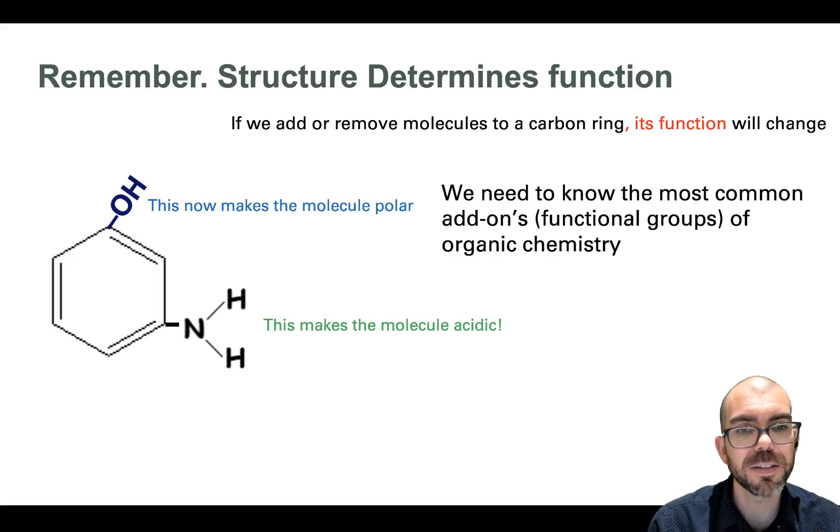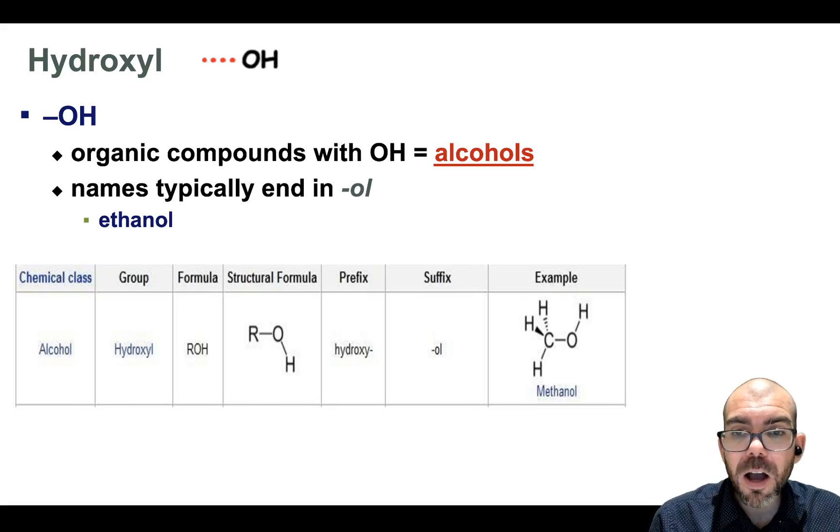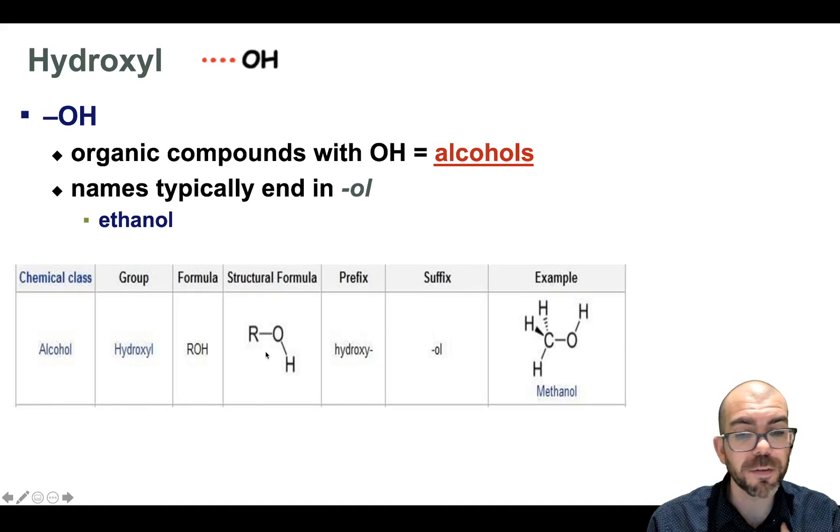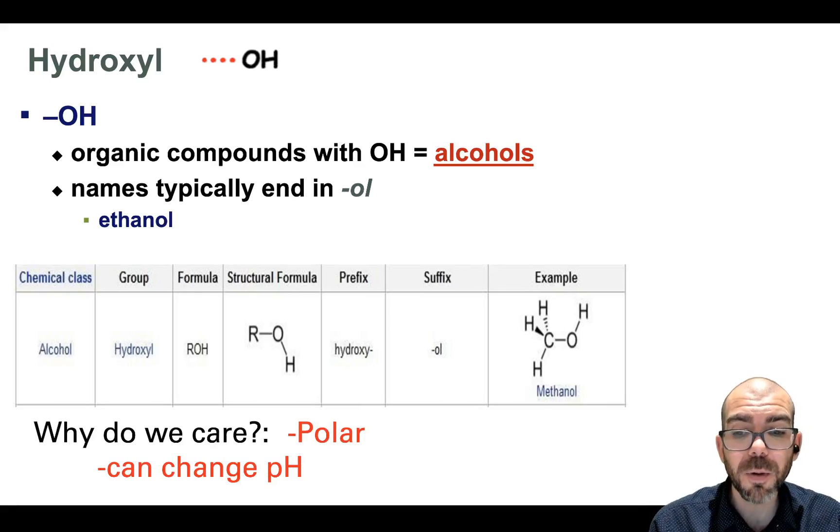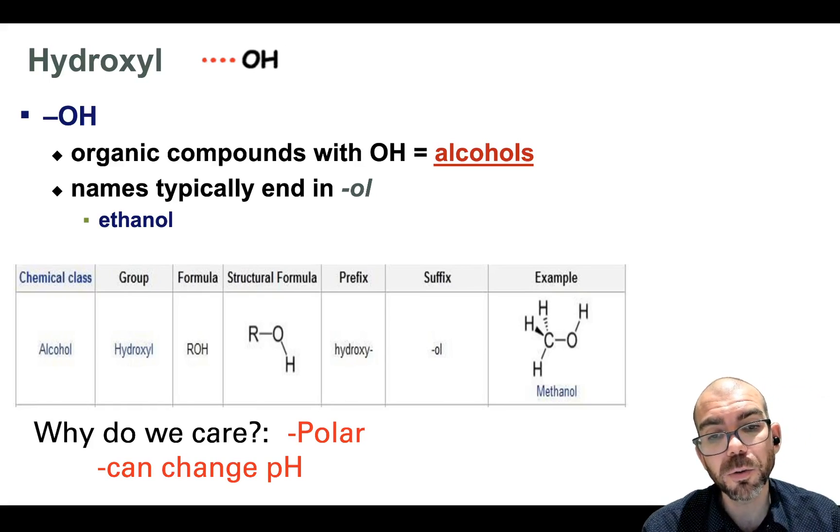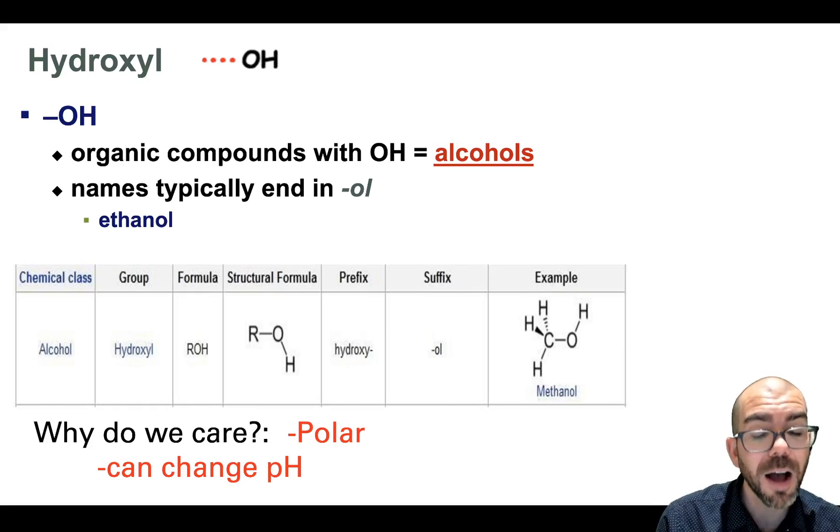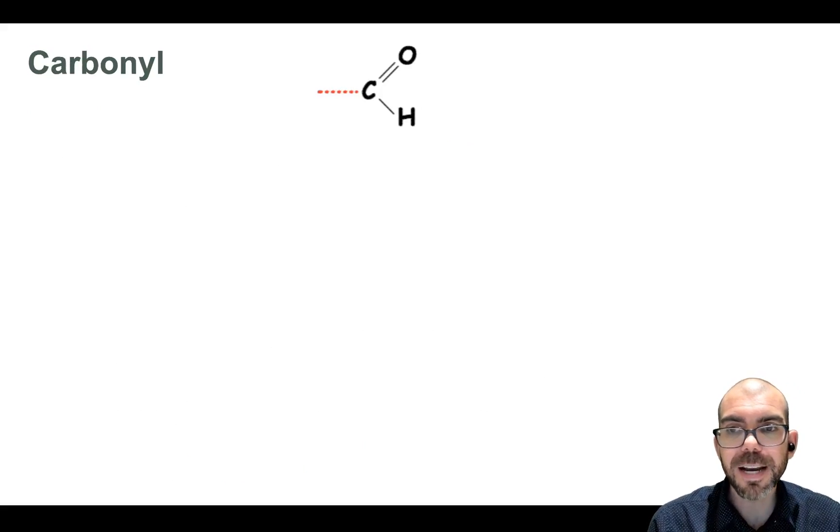So I'm going to go through the greatest hits of functional groups. This is just straight memorization. We will see these functional groups again and again as we go through this class. So I'm going to start with the functional group known as hydroxyl, OH or sometimes OH-. Compounds that have a hydroxyl are referred to as alcohols. The names typically end in -ol, for example, ethanol. The way it's often depicted is there'll be an R, so that's just whatever molecule it's attaching to, and the OH. The big thing to know with hydroxyls is that if I add it to a molecule, it can make it polar. It can also change the pH. If I add OH- to a molecule and it's removed, now I have a free-floating hydroxyl. Reminder that bases are when there's a large concentration of hydroxyls or OH-s.